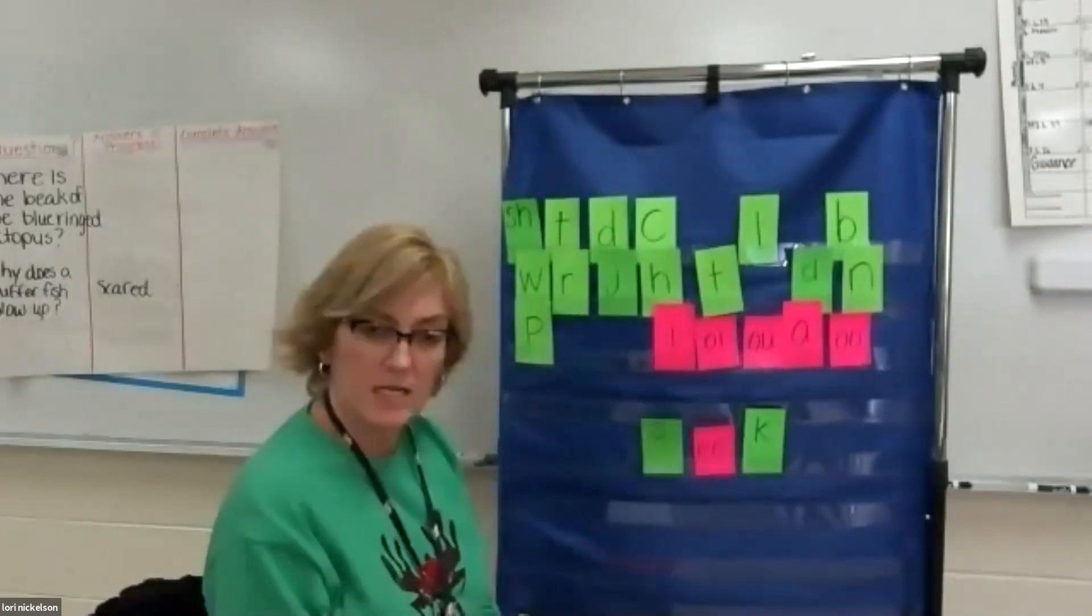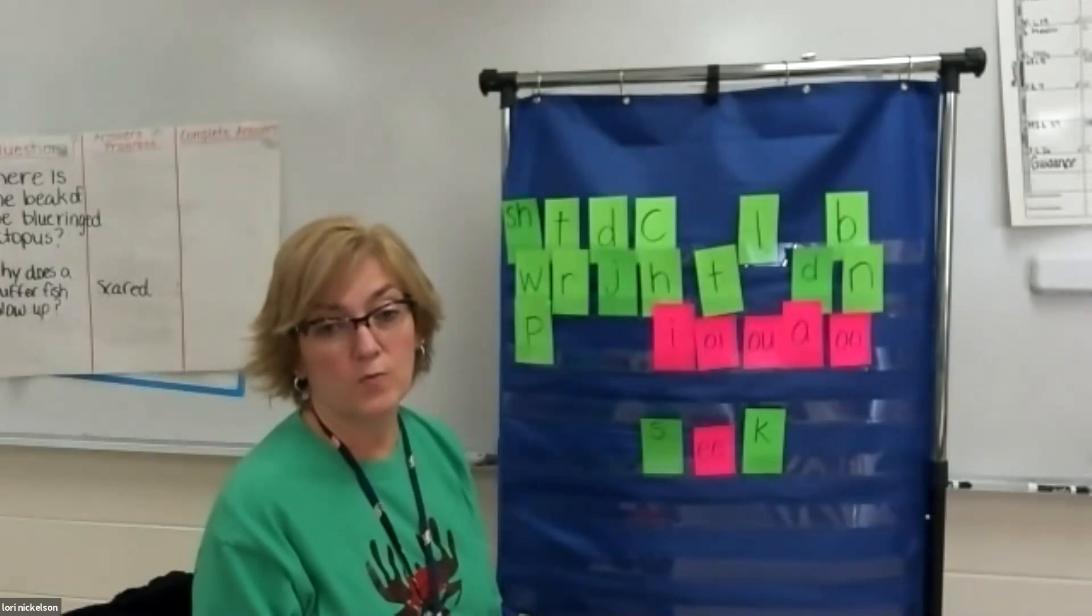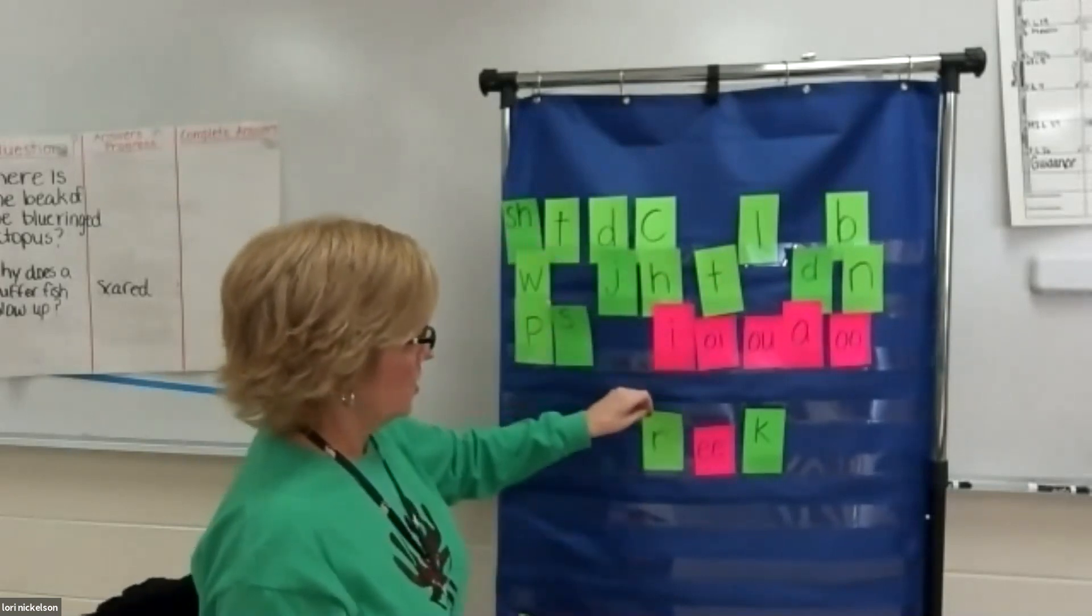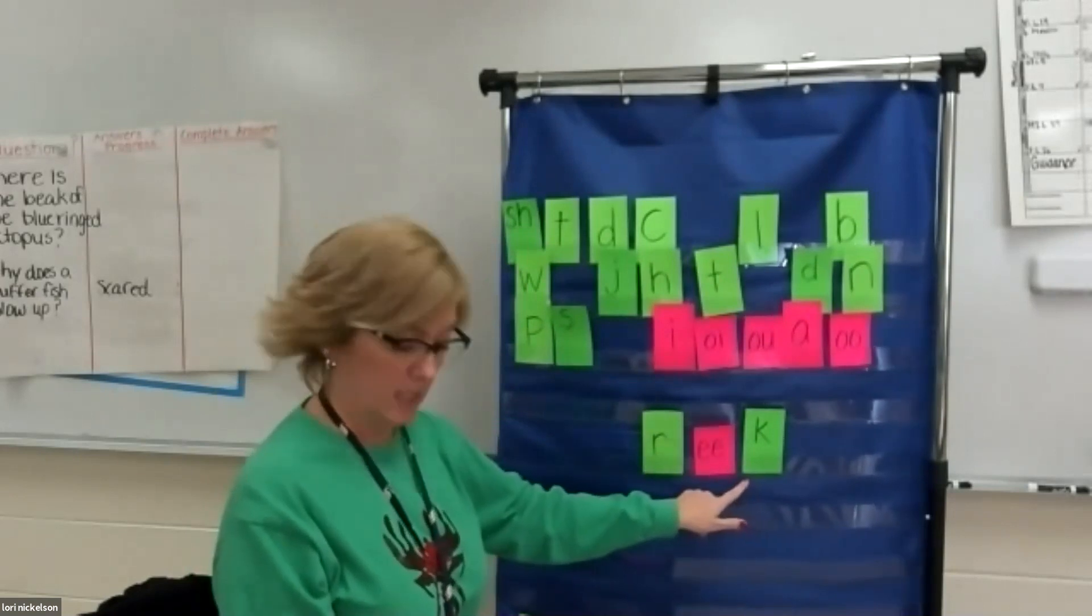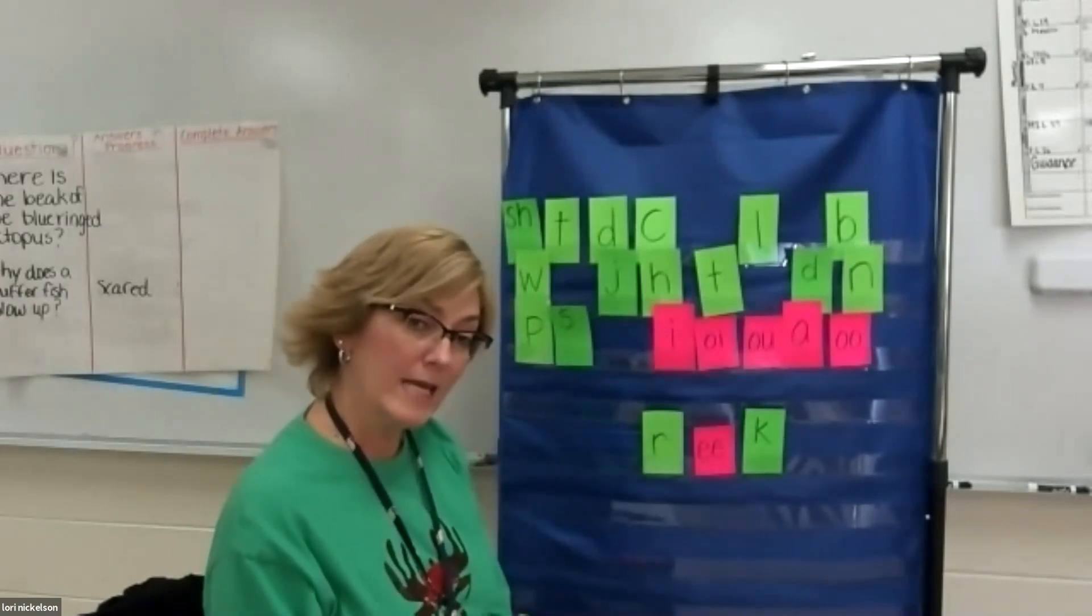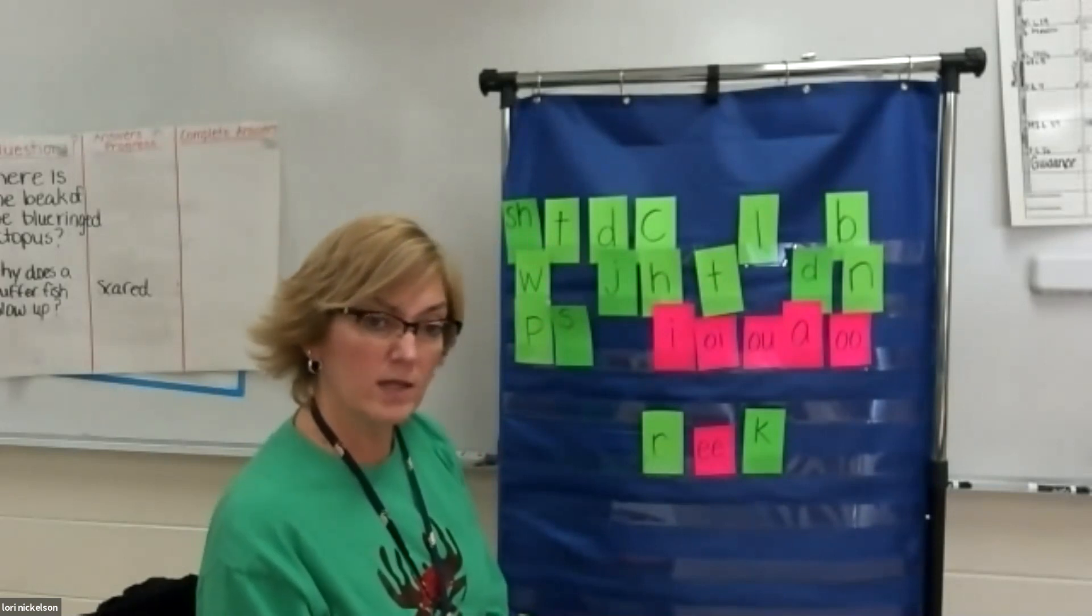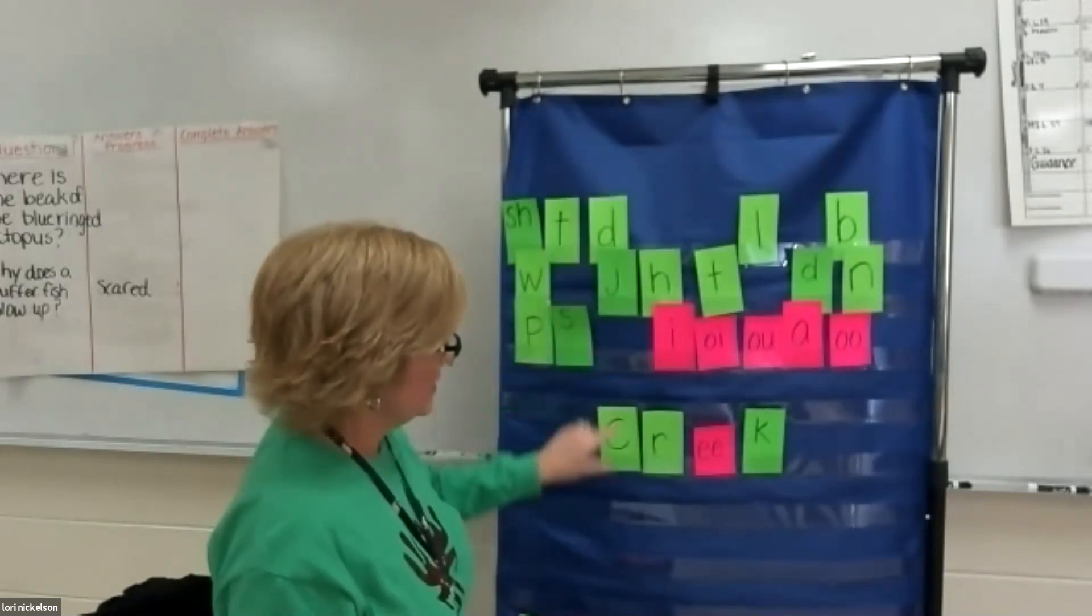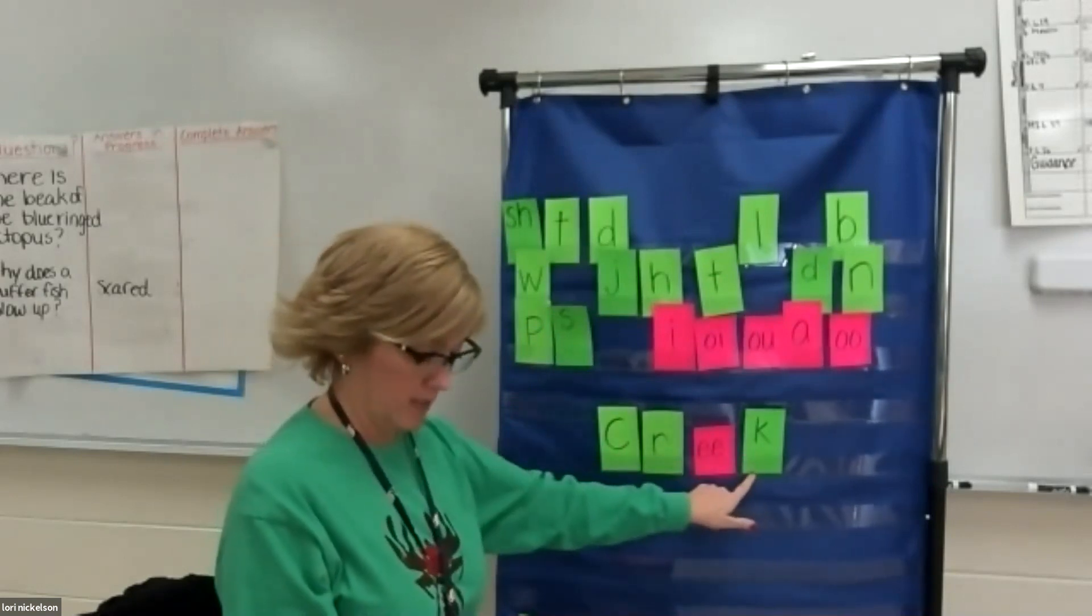So seek, I want to make the word reek. What do I do? Take the S off and add an R, and now I have reek. Okay. From reek, I want to make the word creek. So what letter am I adding? A C to the beginning. And now I have creek. Great.